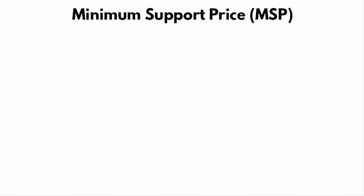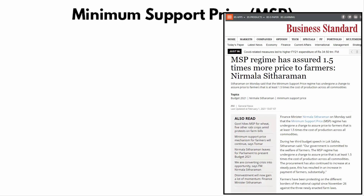In this video, we are going to learn what is MSP, i.e. Minimum Support Price System, what it is meant for, and whether farmers are really benefiting from it. The government of India has ensured MSP to be at minimum 1.5 times the cost of production across all commodities.